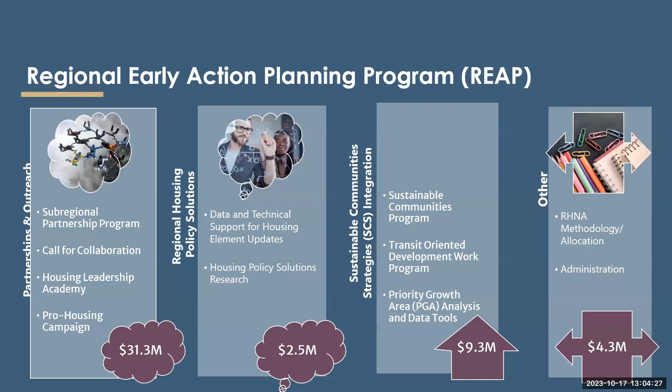In terms of the Regional Early Action Planning Program, SCAG was awarded $47 million by the state in funding from Assembly Bill 101 to provide housing planning and process improvements to cities and counties in the SCAG region. The funding was distributed to SCAG members in four large buckets that financed a diverse array of projects, from ADU guides and permit streamlining to enhanced infrastructure financing districts. The four main buckets are: partnerships and outreach ($31.3 million), regional housing policy solutions ($2.5 million), sustainable community strategies and integration ($9.3 million), and other types of projects ($4.3 million).